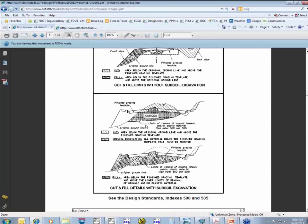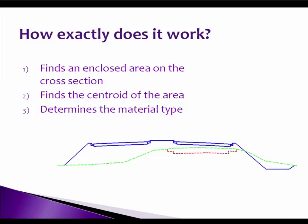The next thing I want to talk about is how Geopack computes our earthwork. It uses the average end area method, which as of right now is the way we want it done according to FDOT standards. It uses the elements in our cross sections to determine the area and multiplies it times the distance between our cross sections.